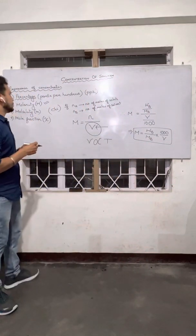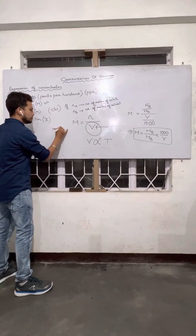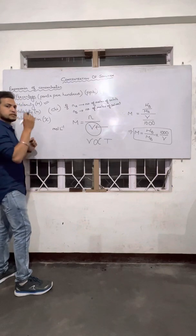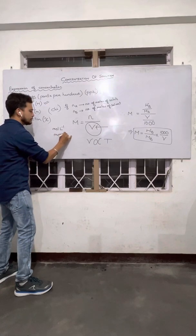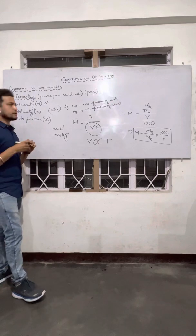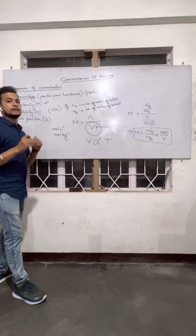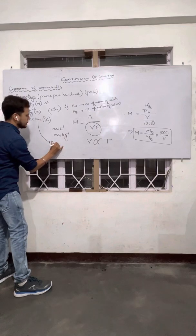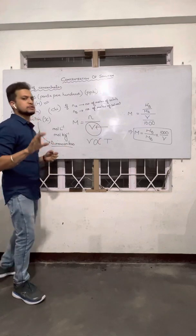Regarding the units: for molarity, it is moles per liter. For molality, it is moles per kilogram. And very importantly, mole fraction — since it is number of moles divided by number of moles — remains dimensionless. So remember that mole fraction is always dimensionless; there is no unit for it.